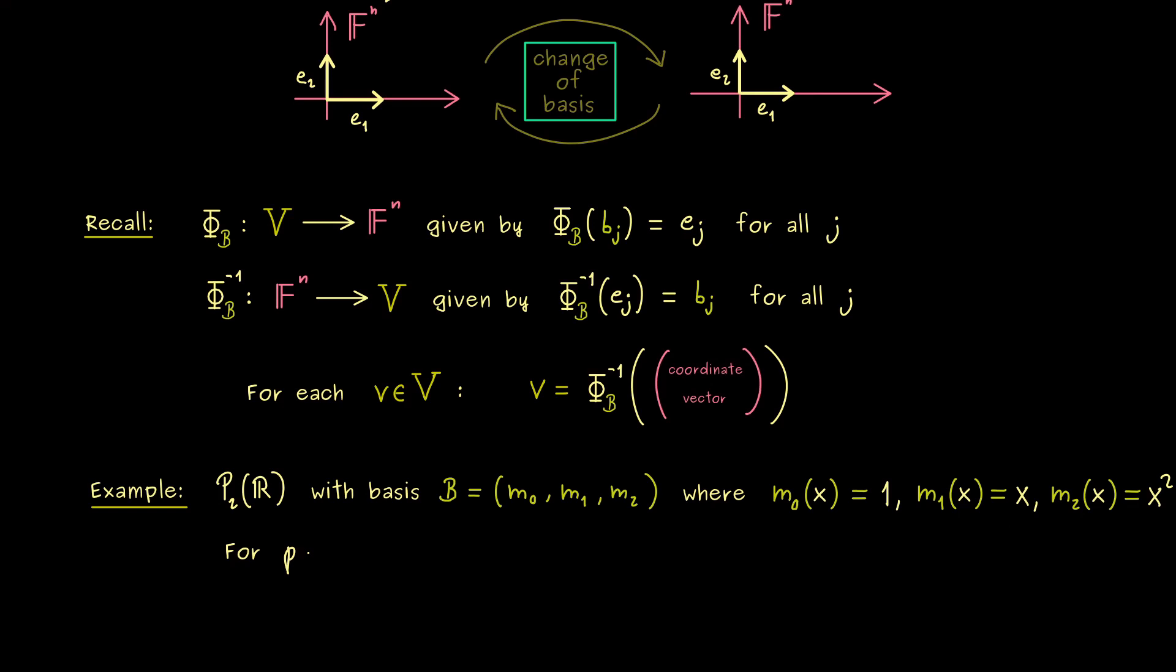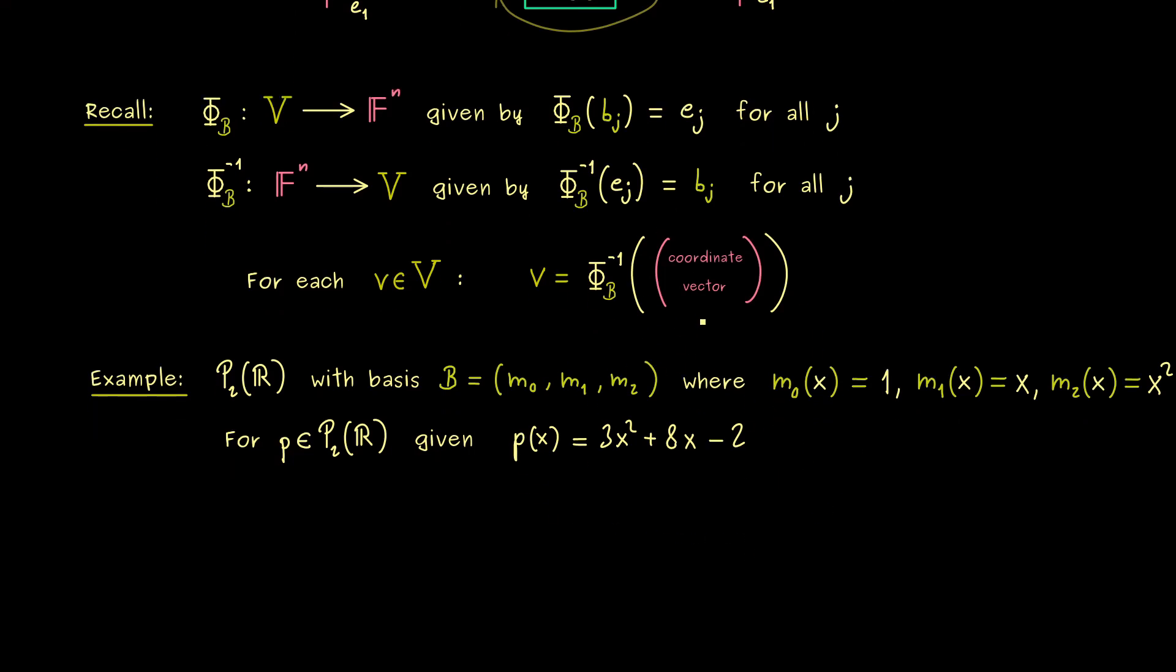This means we have a nice basis in our P₂. Then let's look at an example p given as p(x) defined by 3x² plus 8x minus the constant 2. So now the question for you is what is the coordinate vector in this case? So obviously you can write p as a linear combination of the basis vectors. So first we have minus 2 times m₀ and then we have 8 times m₁ and also 3 times m₂.